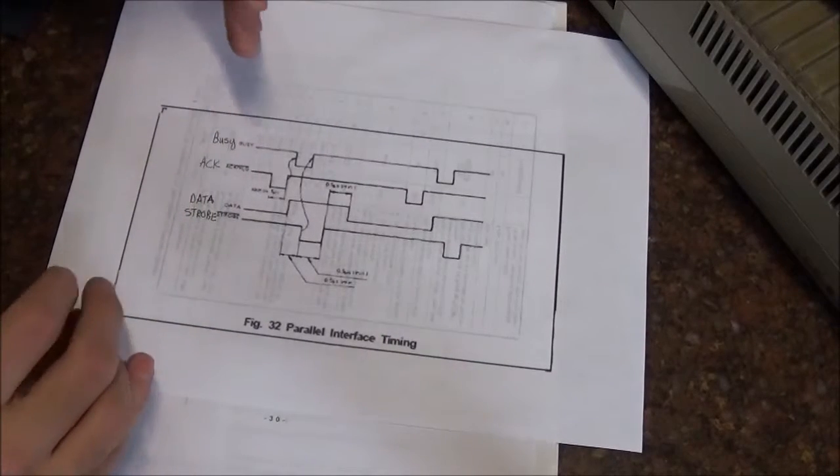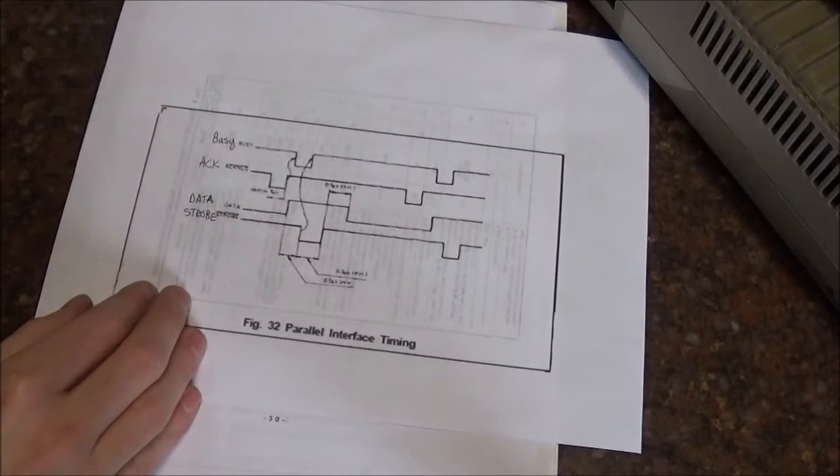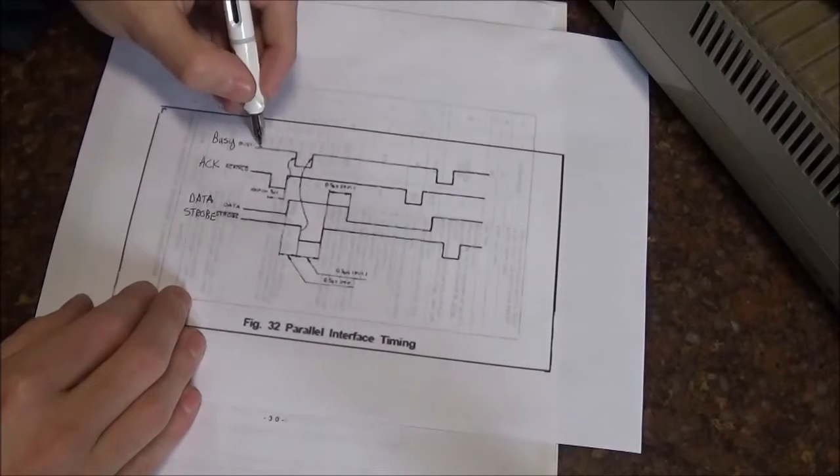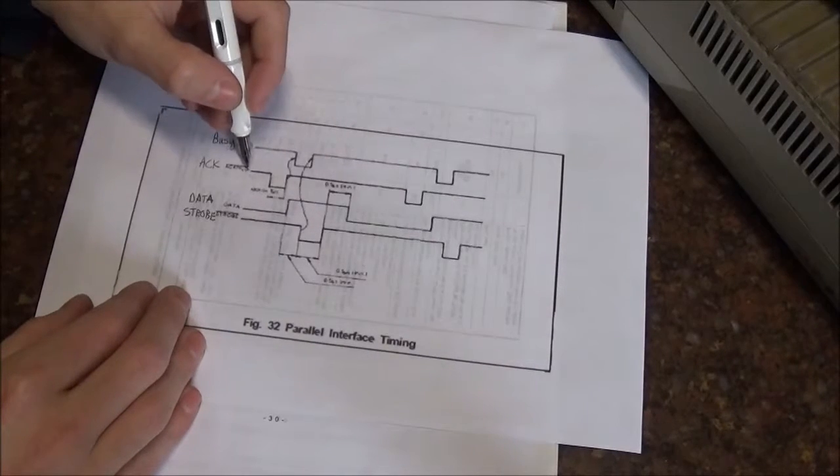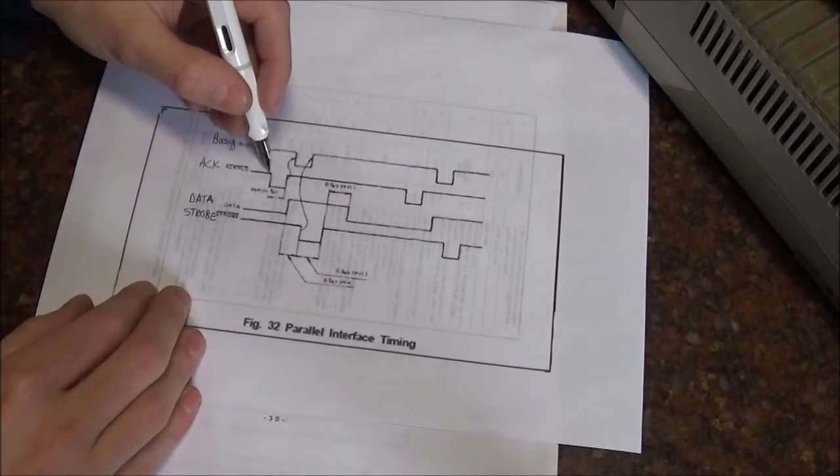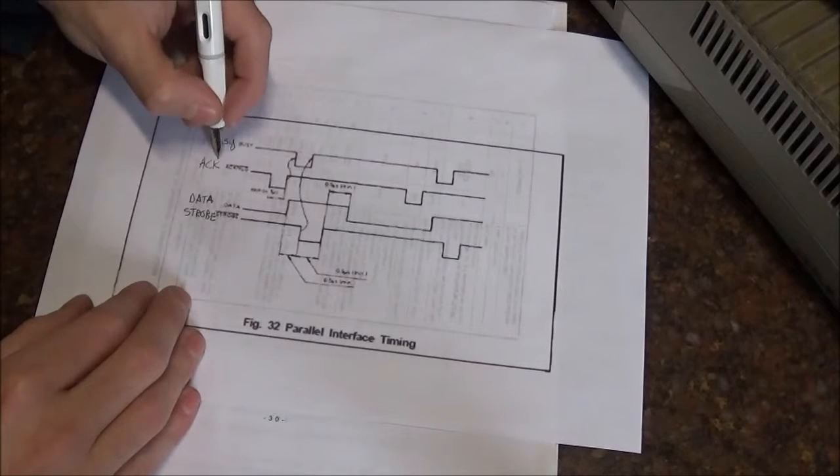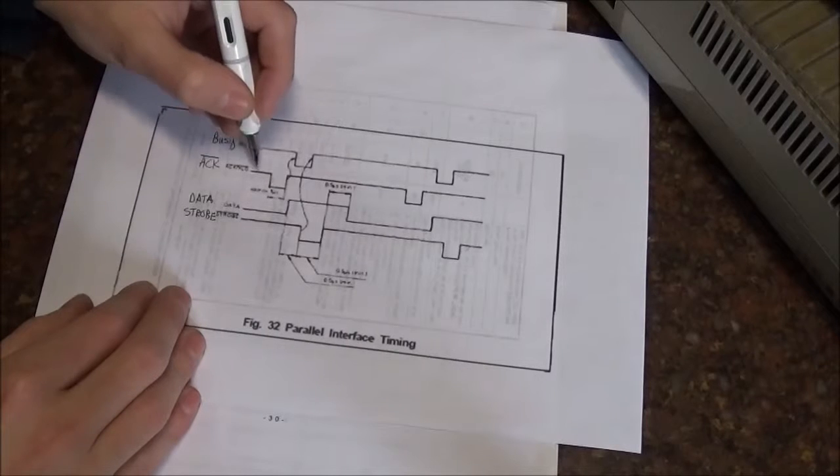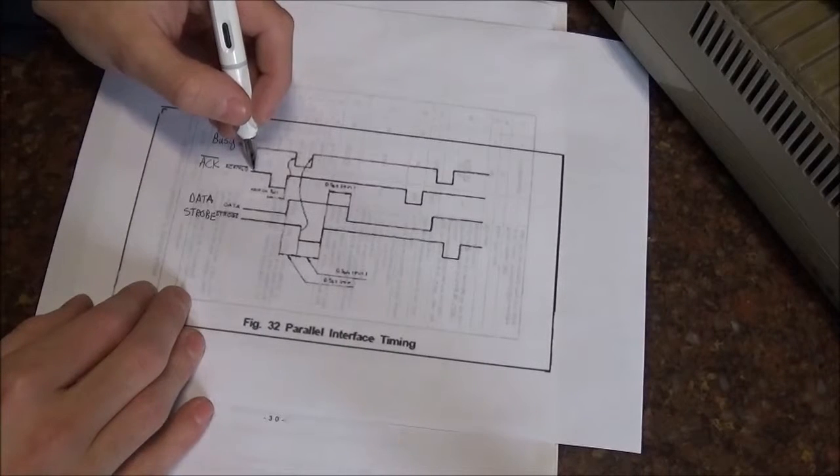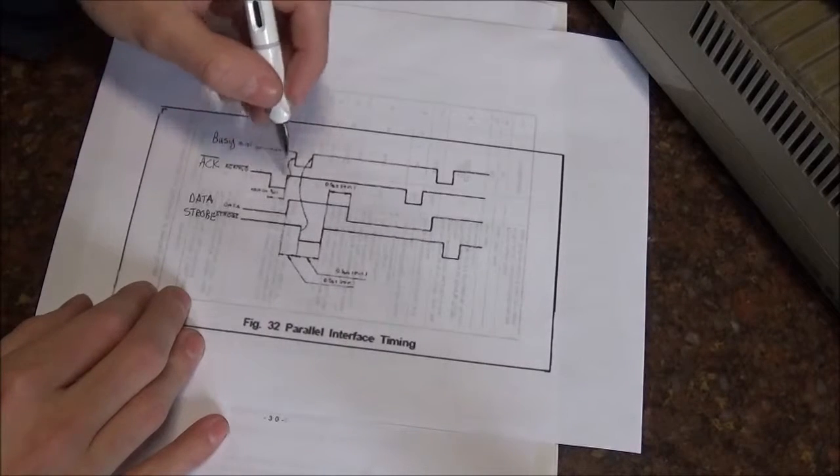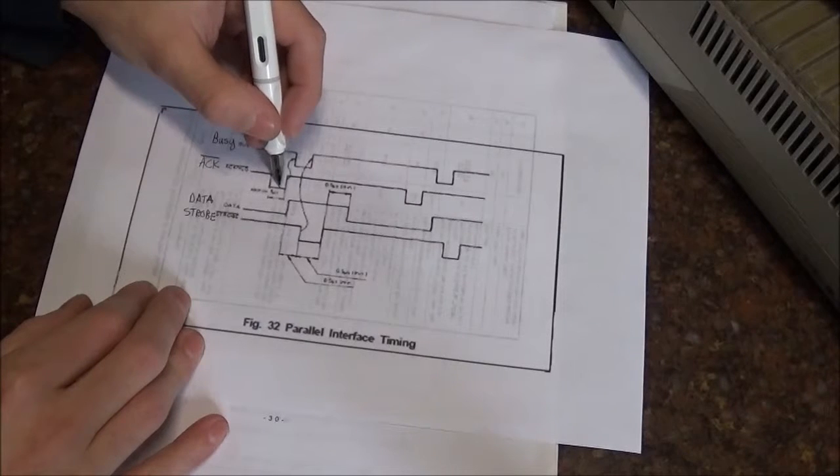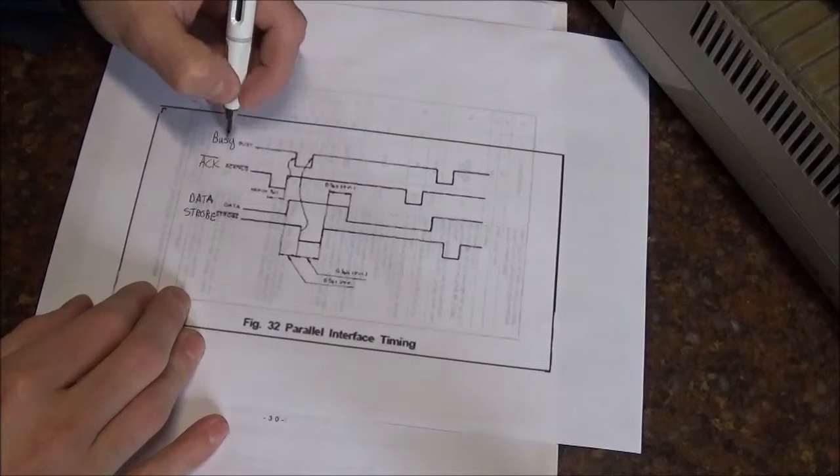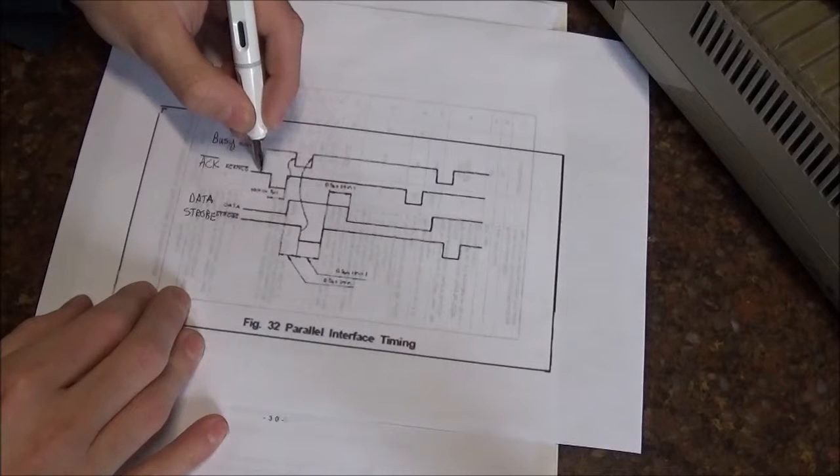So this diagram assumes that the printer is busy with something at the beginning. Let me just get something to point here. So the busy signal is high and the acknowledge signal is high. Now it's important to remember that this acknowledge signal is prime. So when we see one here, it means that the printer is not acknowledging. When we see a zero, that means the printer is acknowledging. So as it starts, the printer is busy and it's not listening.